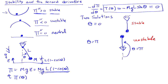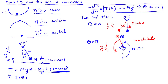The intuition is that for the second system (θ = π), if we perturb the pendulum slightly, gravity pointing downward will simply drive it away from the equilibrium of being straight up. Whereas for the first solution (θ = 0), if we perturb the pendulum to the left, gravity will drive the pendulum back toward the equilibrium position. This is what we mean by stability. We can now write this out mathematically and relate it to the second derivative of the potential energy.